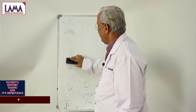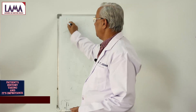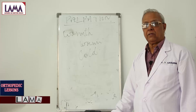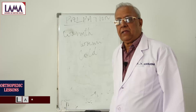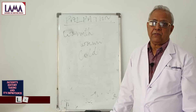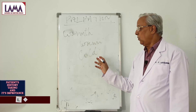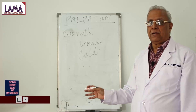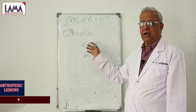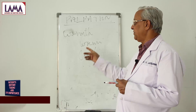After inspection, we come to palpation. The first thing in palpation is warmth. In palpation, the swelling or the limb may be very warm to touch or cold. A warm swelling means it is most probably inflammatory, or sometimes malignant, or following trauma there could be bleeding into the joint. Cold means usually the blood supply to the part is much less. So warmth is very, very important.